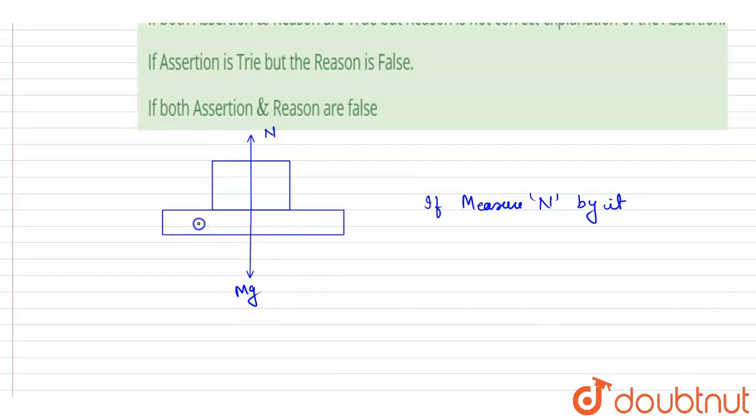direction with acceleration a, you have to write N minus mg equals ma. So N equals mg plus ma, which is not equal to mg. So it is not compulsory